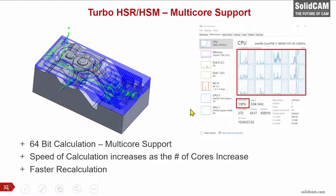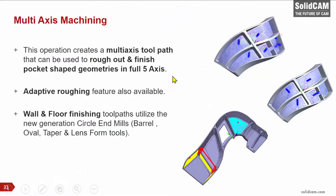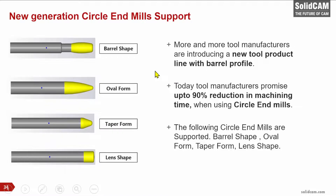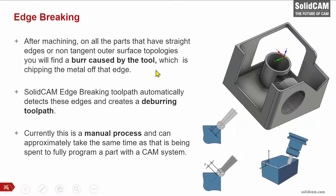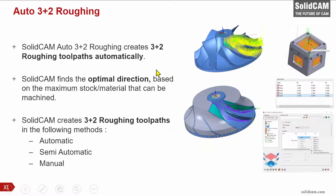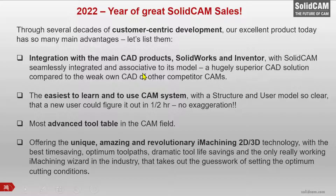A few more things we did in version 2021: we have Turbo HSR-HSM with multi-core support for very fast calculation, we support multi-axis machining, we support circle end mills, edge trimming, edge breaking — quite a unique functionality — and also auto 3+2 operation.